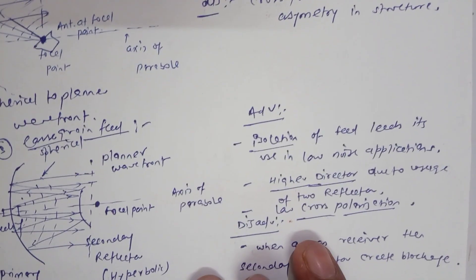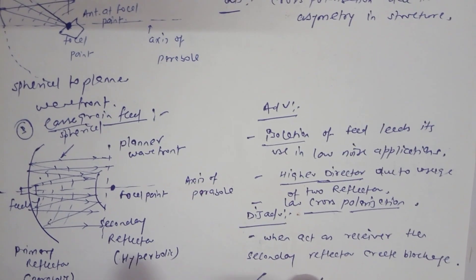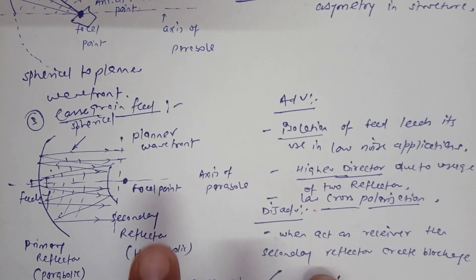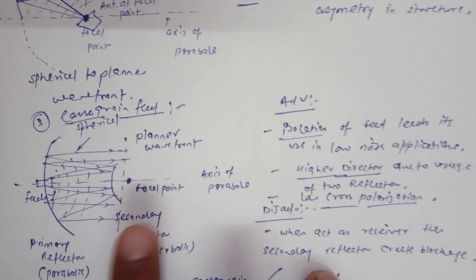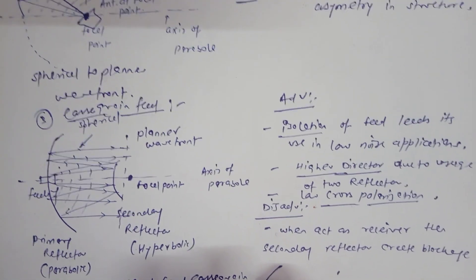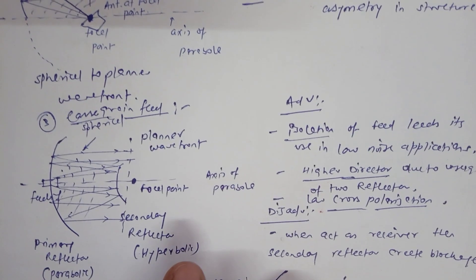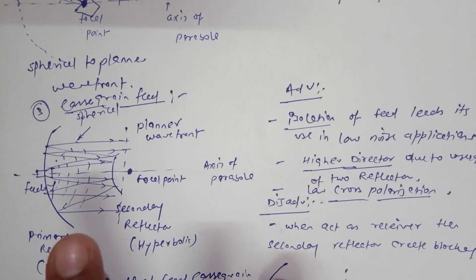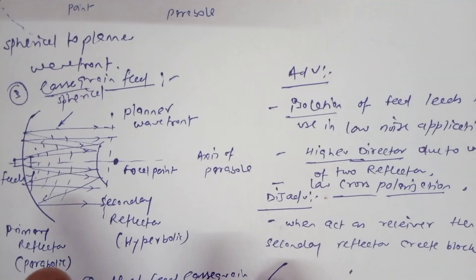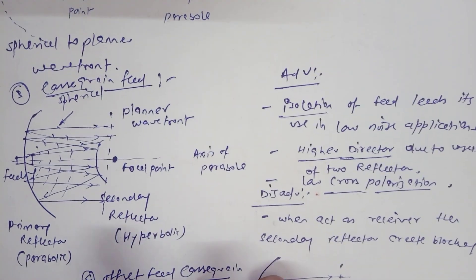The third feeding mechanism is the Cassegrain feed. Instead of one reflector, two reflectors are used: a primary parabolic reflector and a secondary hyperbolic reflector. The signal from the feed first reflects off the secondary hyperbolic reflector, then reflects back off the primary parabolic reflector, producing a planar wavefront. Two reflections occur — one from the primary and one from the secondary reflector.